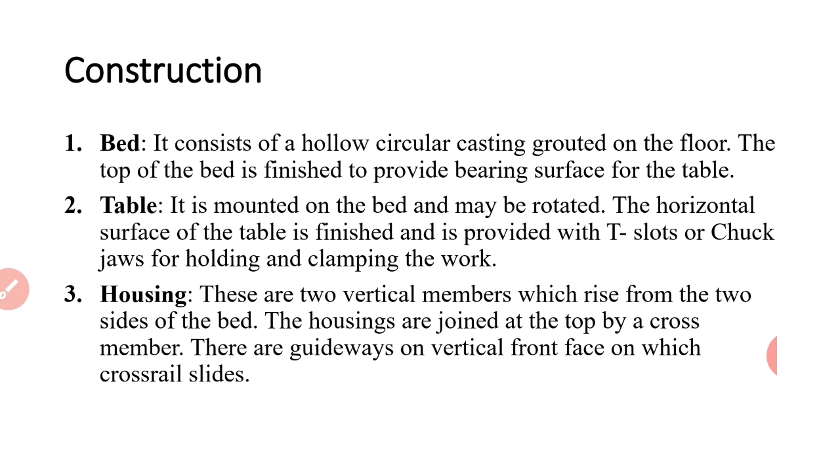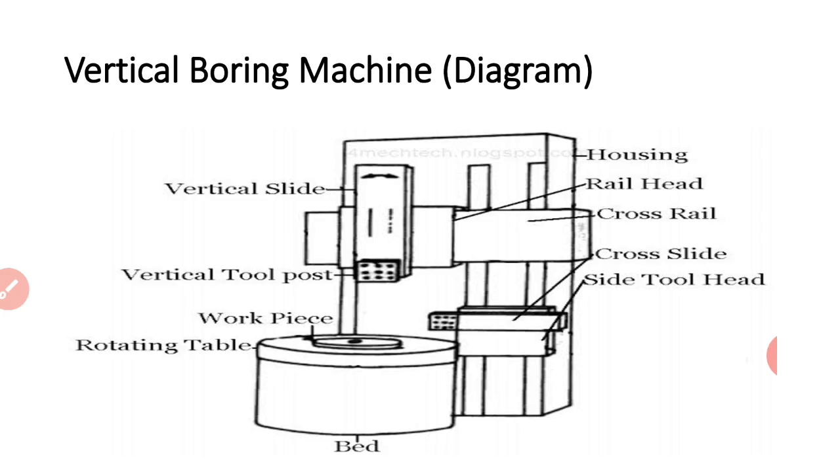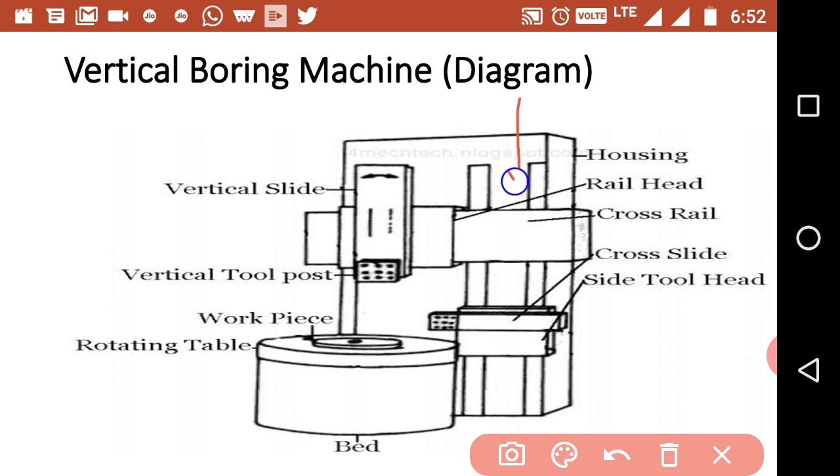Third is housing. Housing consists of two vertical members which are located on two sides of the bed. These housings are joined to each other at the top by a cross member, which is called cross rail. The front vertical face of the housing has guideways on which the cross rail slides.